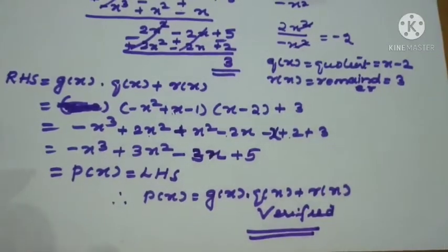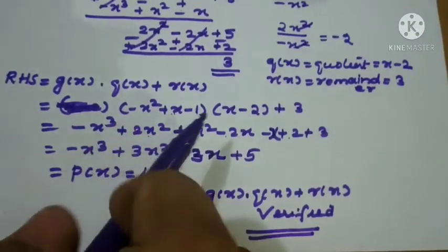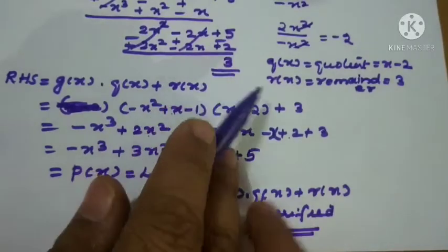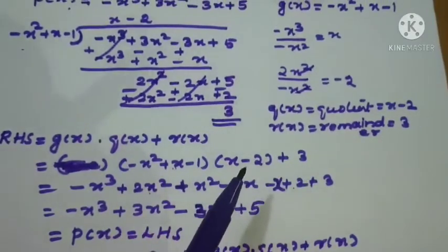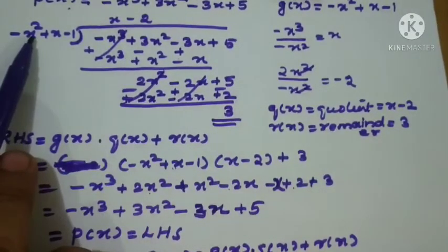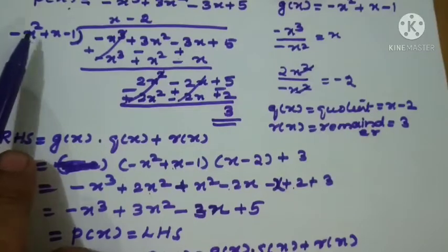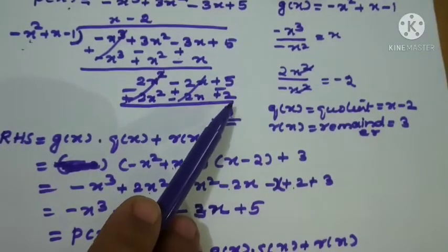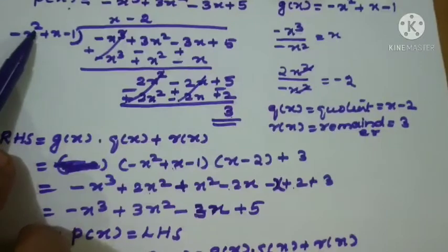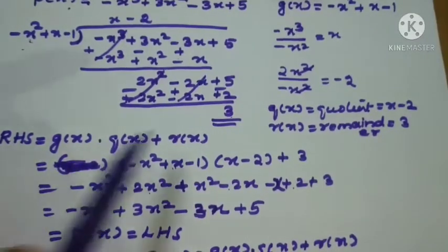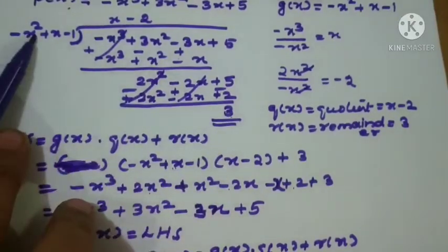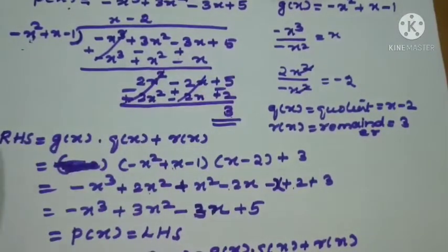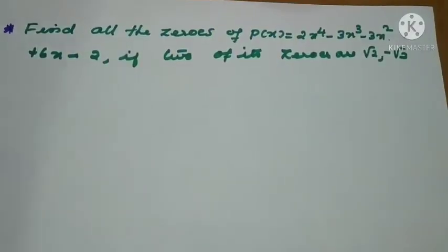One more point: the remainder is 3, which is a constant polynomial. The degree of a constant polynomial is 0. The degree of the divisor here is 2. So the degree of the remainder is less than the degree of the divisor — this is the cross-check. If you are getting a higher degree remainder than your divisor, then the step is wrong.